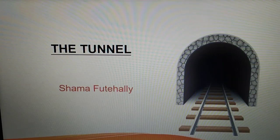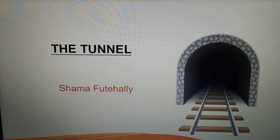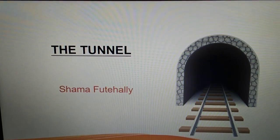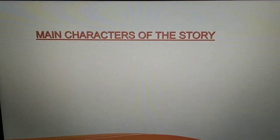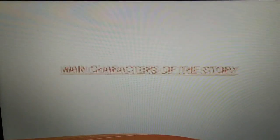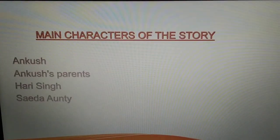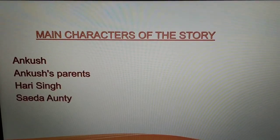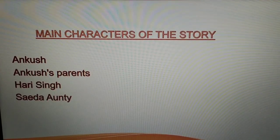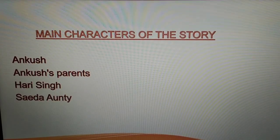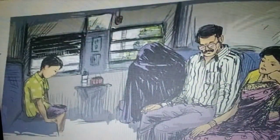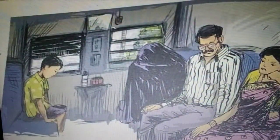Let's begin. The chapter is divided into 3 sections. The main characters of the story are Ankush, Ankush's parents, Hari Singh, and Saida auntie. The setting of the story is in a train.